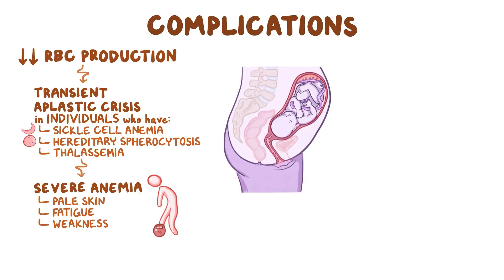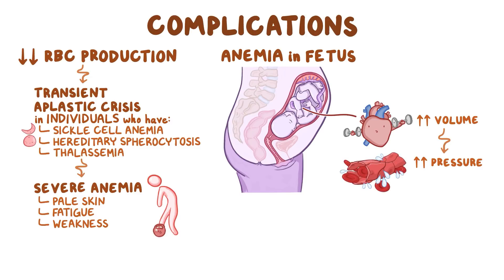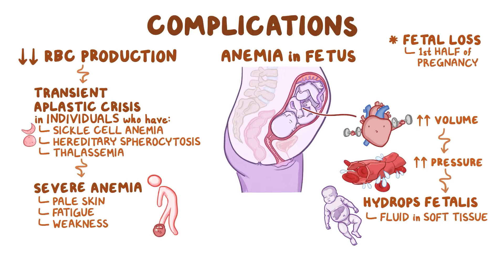Parvovirus B19 in a pregnant female can cause anemia in her fetus. Because there are fewer red blood cells to carry oxygen, the heart will pump a larger volume of blood to give the growing fetus all the oxygen it needs. This raises the pressure inside blood vessels and fluid can start to leak out of the capillaries as a result. This can result in hydrops fetalis, or the abnormal accumulation of fluid in soft tissues. Fetal anemia is also linked to fetal loss, particularly if the parvovirus B19 infection is in the first half of the pregnancy. The good news is that there are no fetal defects associated with parvovirus B19 for those fetuses that survive the infection.